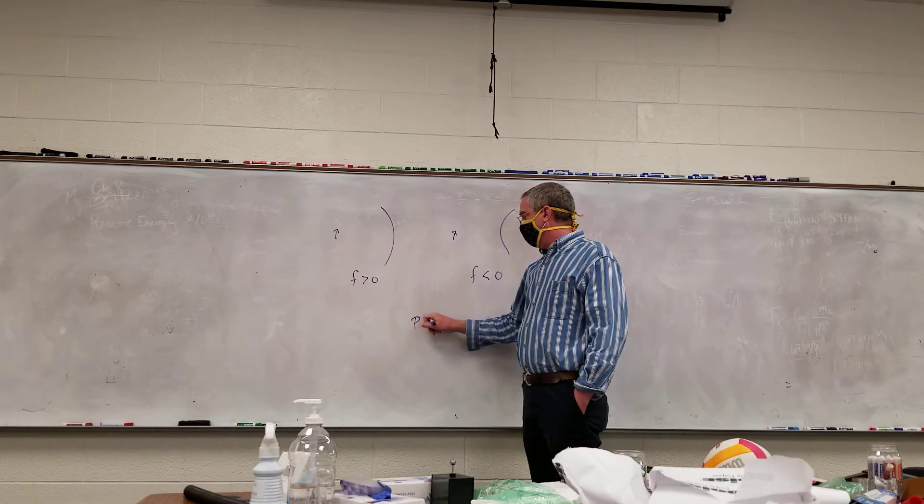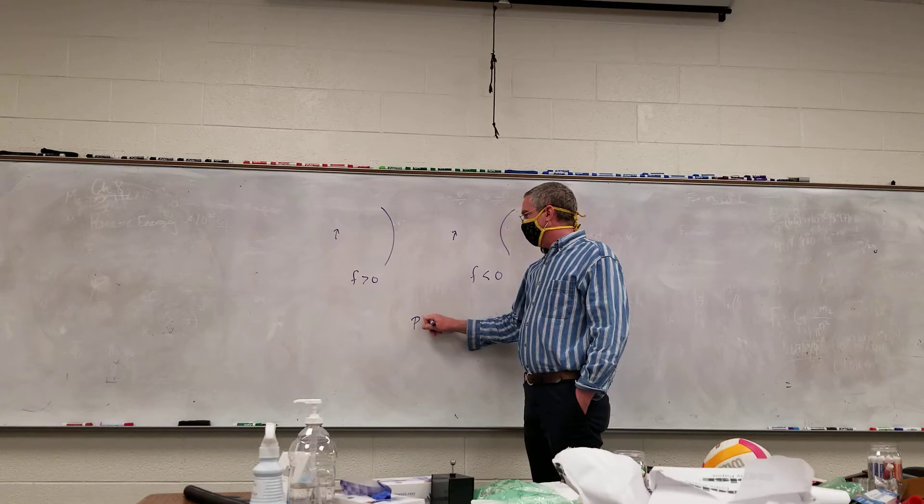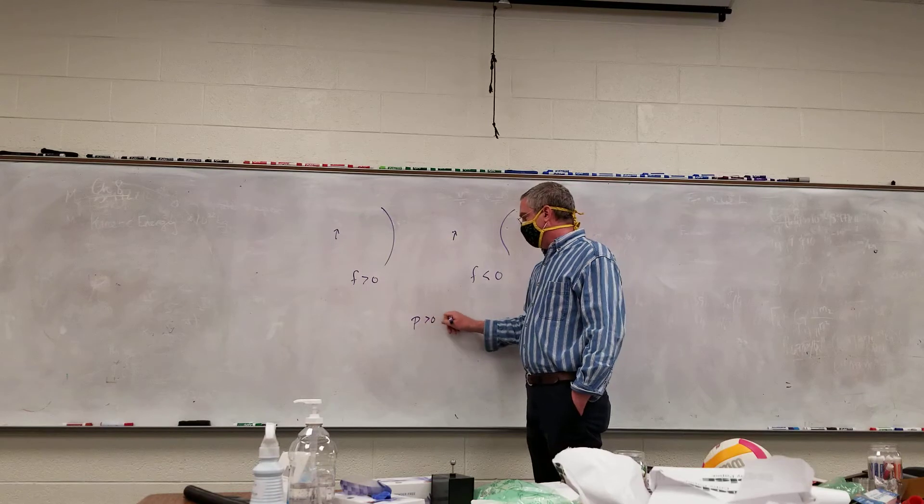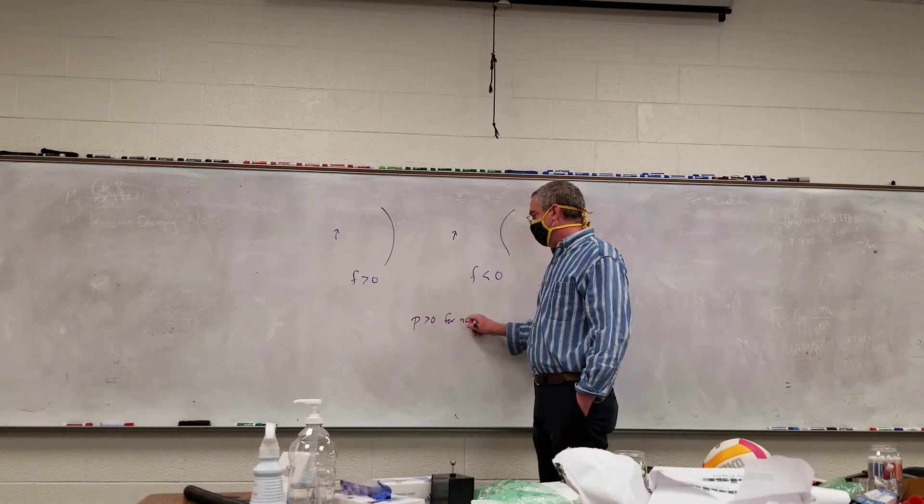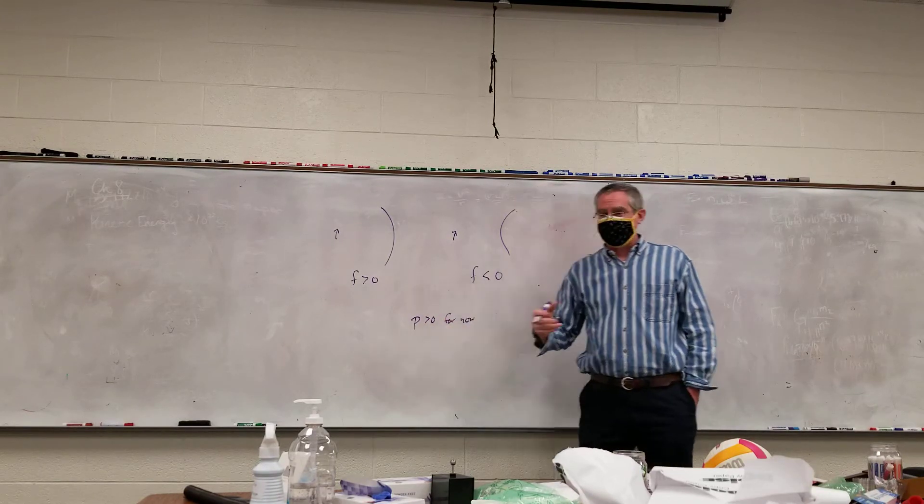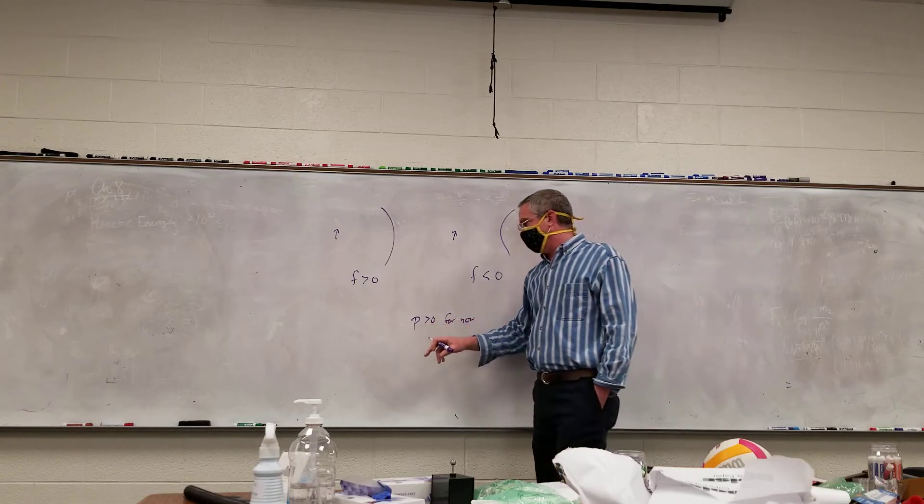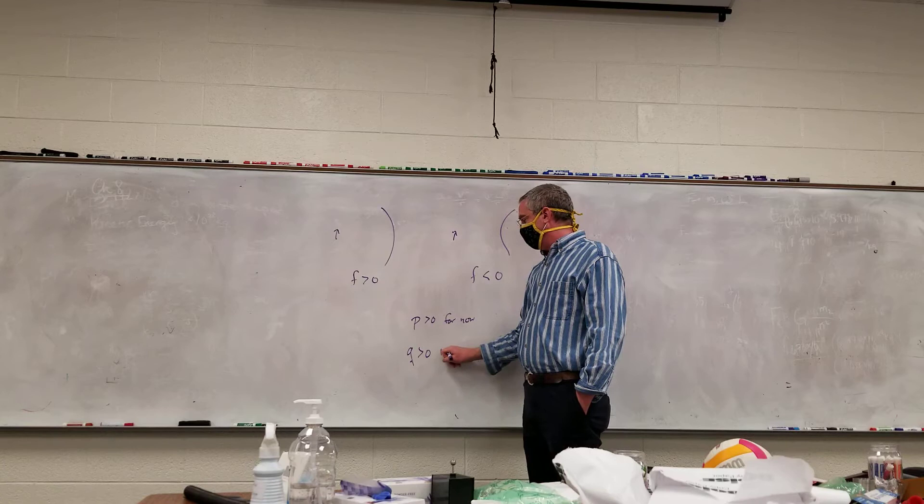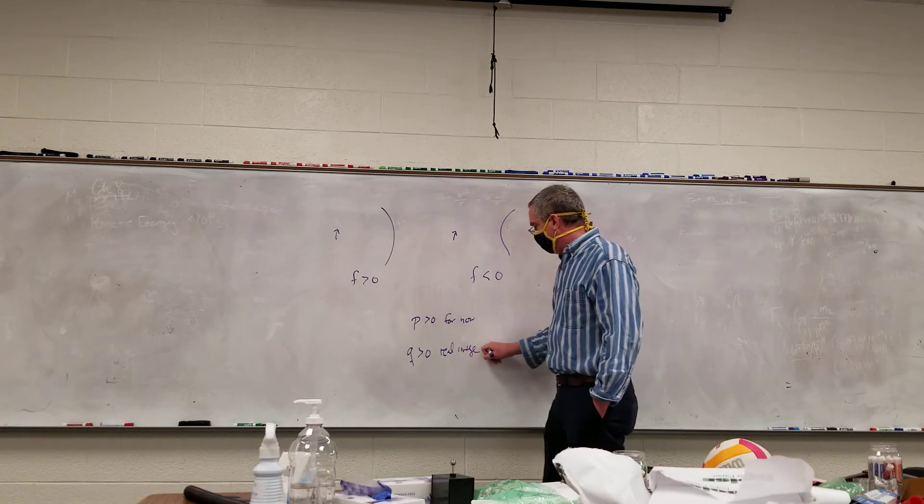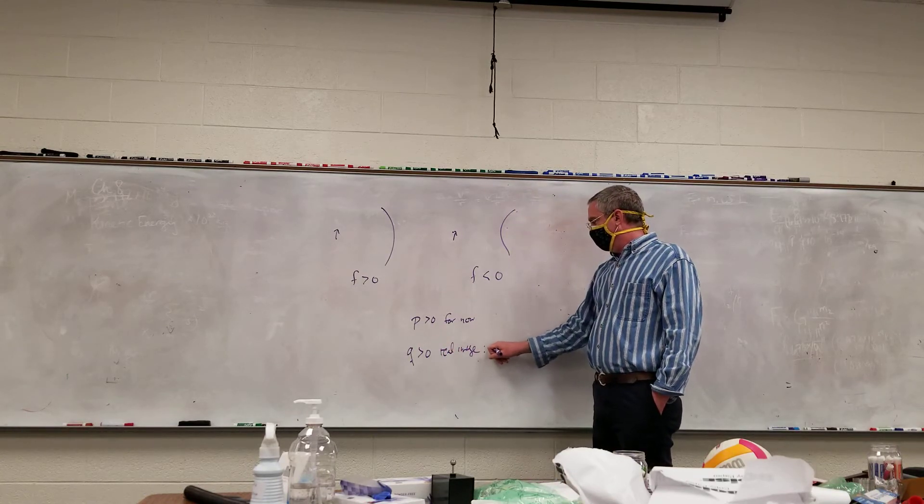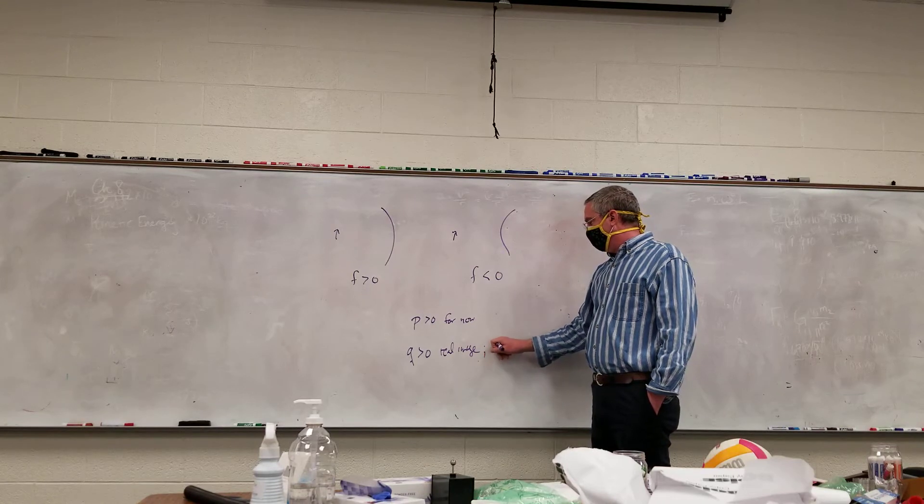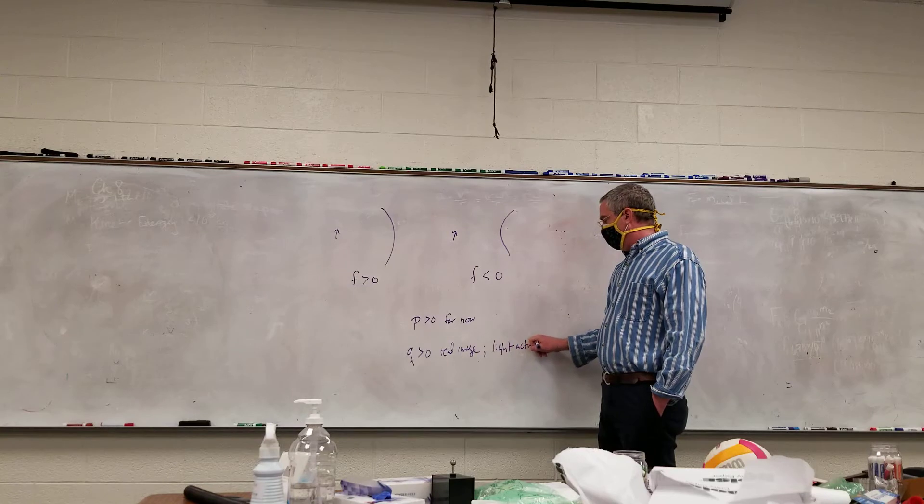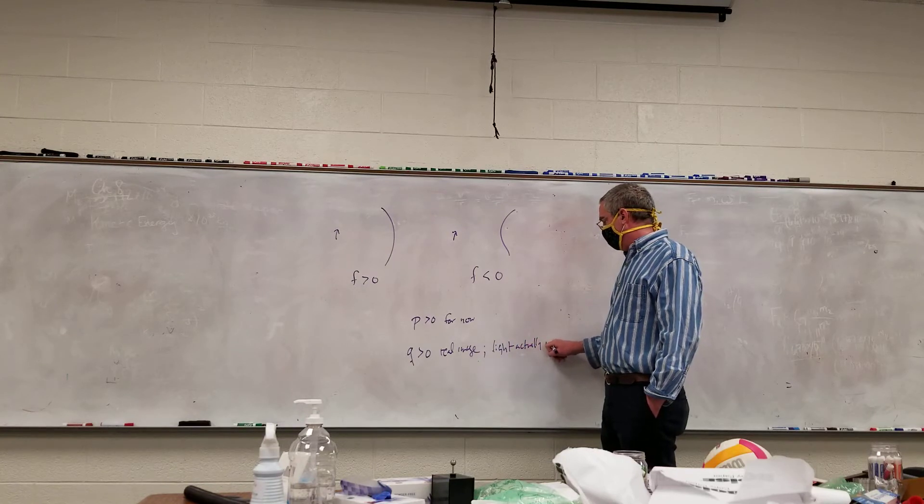And p, potentially p could be negative, but for everything we've done so far, p is a positive number for now. And when we get into lenses, we'll talk about when p is a negative number. And then q positive means real image. In other words, light rays actually meet. It's now on the other side of the mirror.